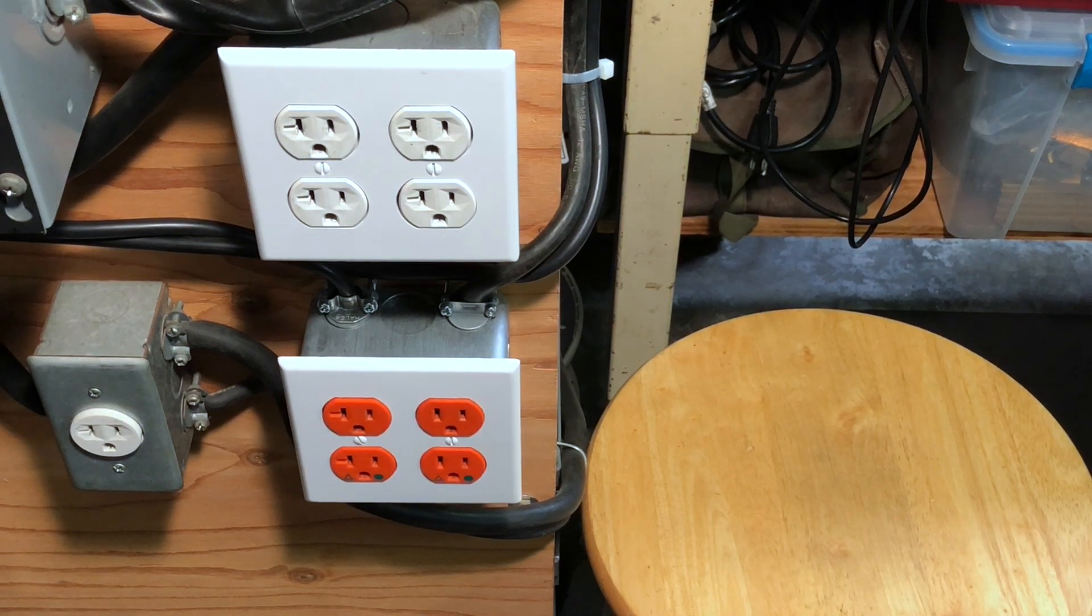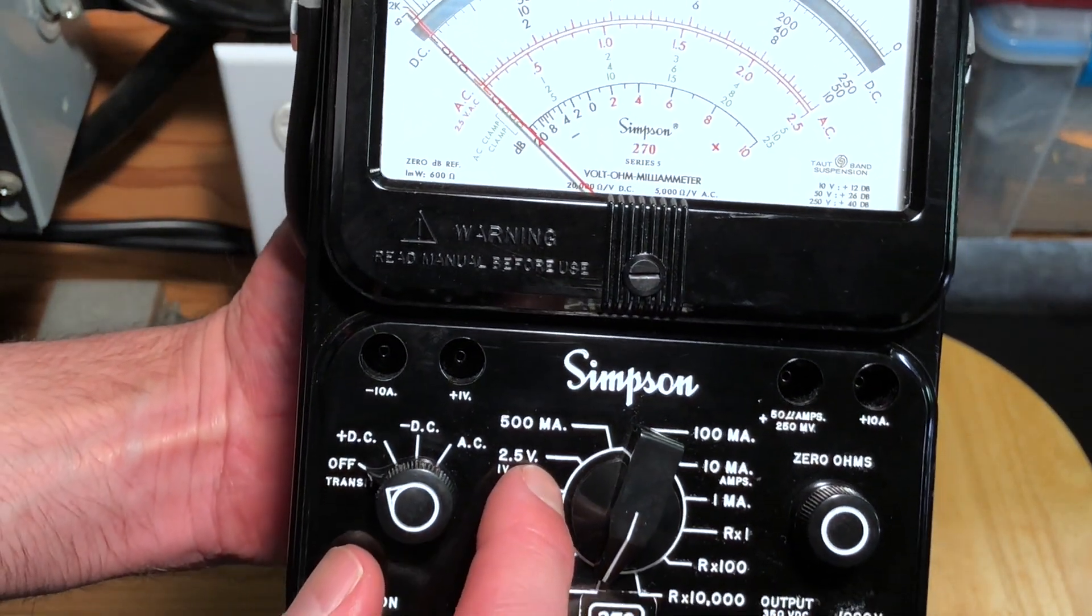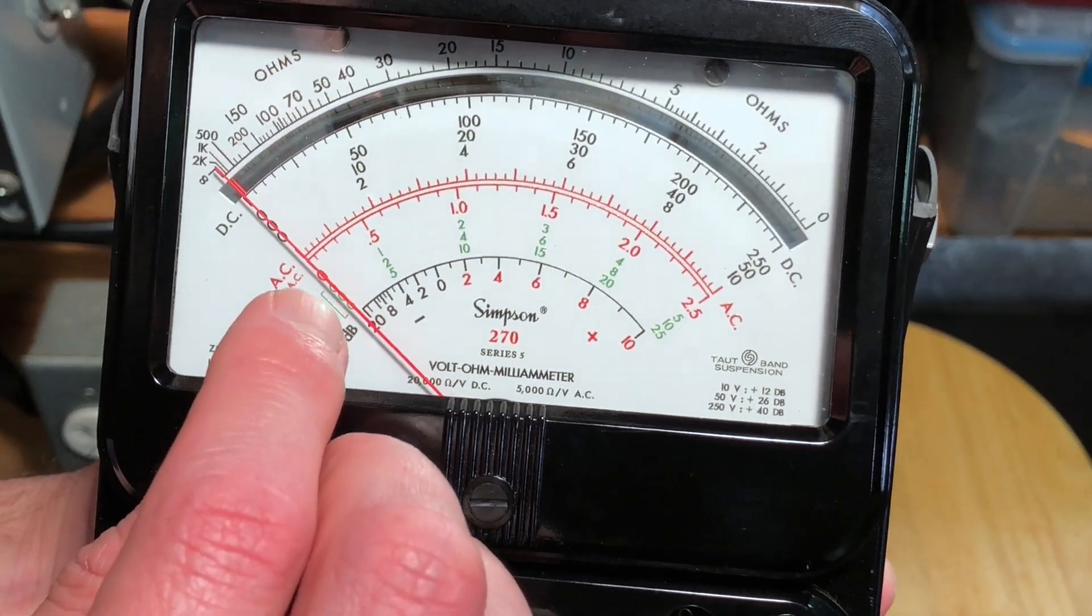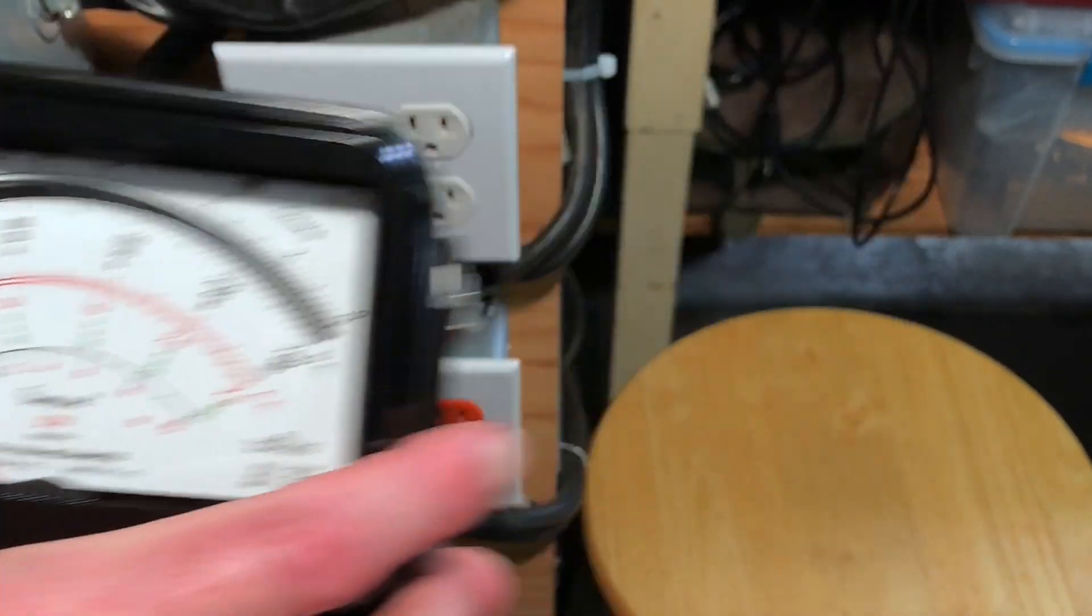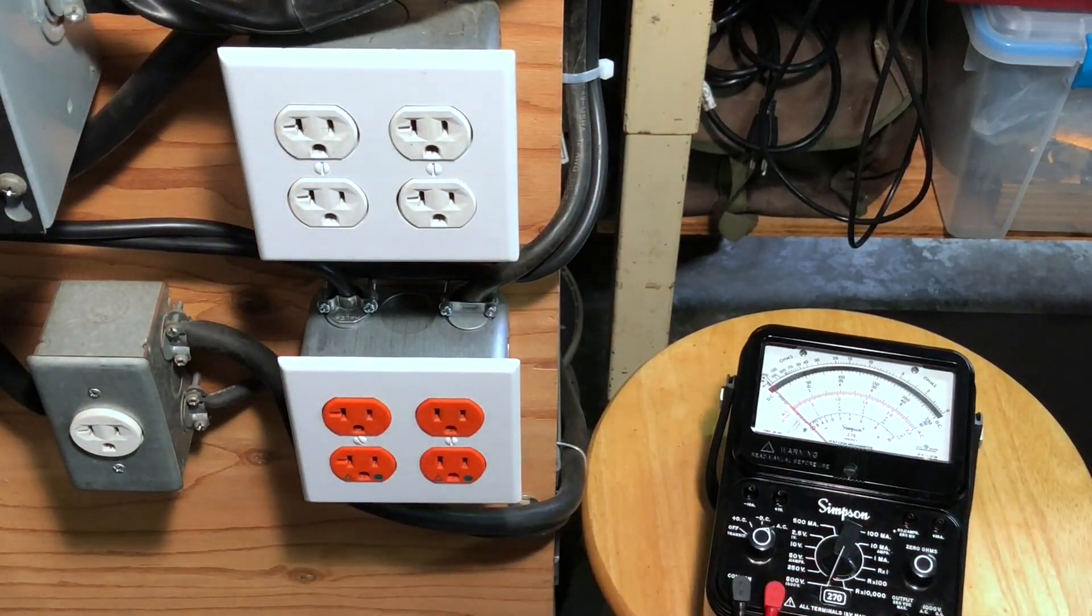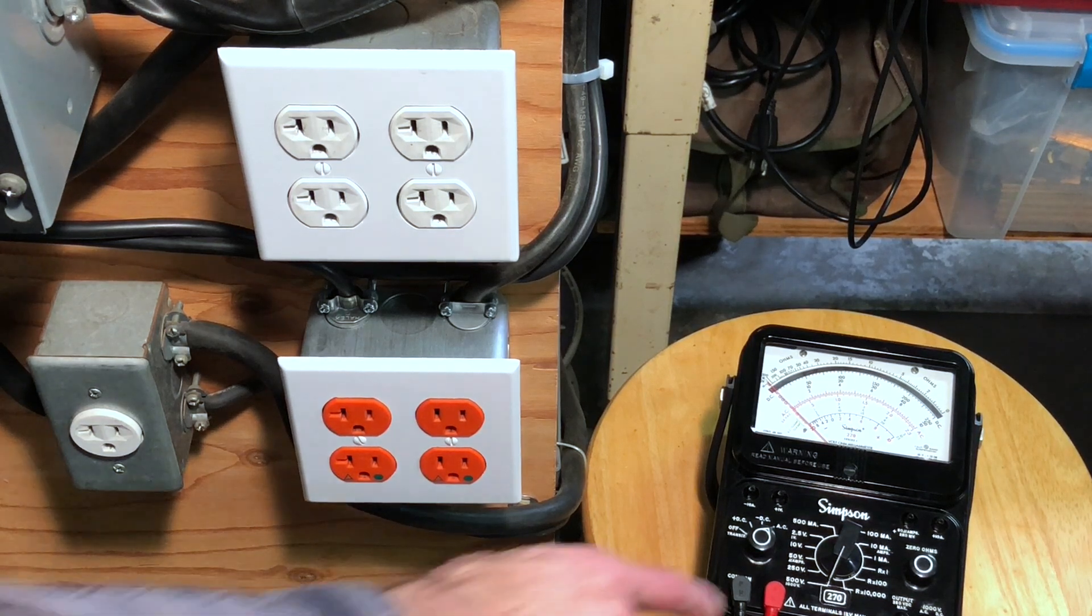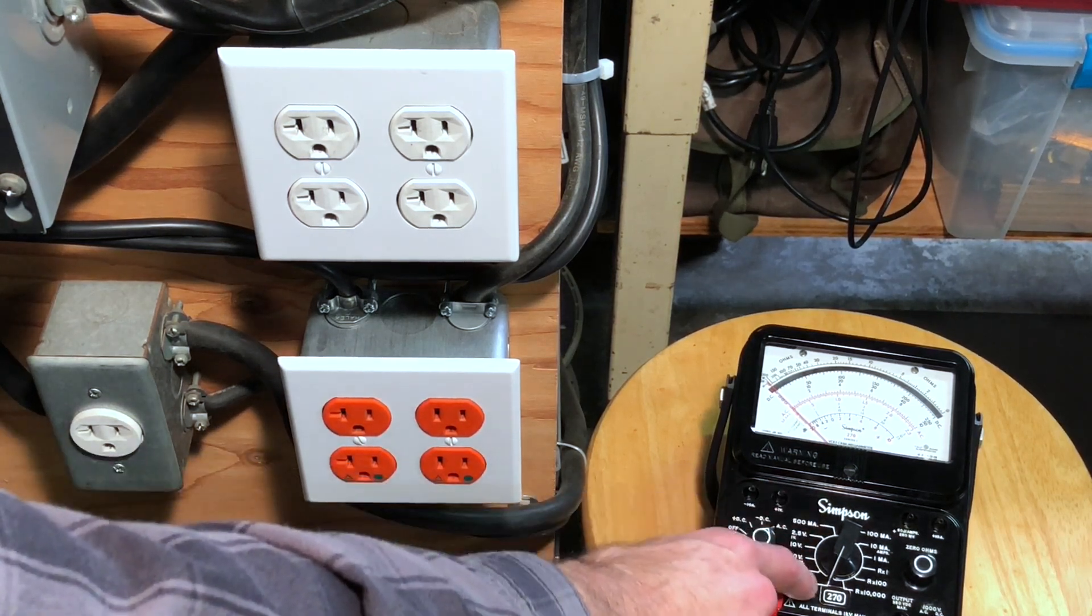Let me grab my Simpson 270 meter from the shelf. We'll be using the 500 volt range down to the 2.5 volt range, and we'll set this over to AC volts. You can see the impedance on AC is 5,000 ohms per volt. On AC, this red scale here, the lower red scale is for 2.5 volts, and then the other ranges use the upper red scale with the numbers written in black. What that 5,000 ohms per volt means is that the impedance of the meter can be figured out by multiplying the voltage you're on. For example, 500 volts multiply that by 5,000, you get 2.5 mega ohms.